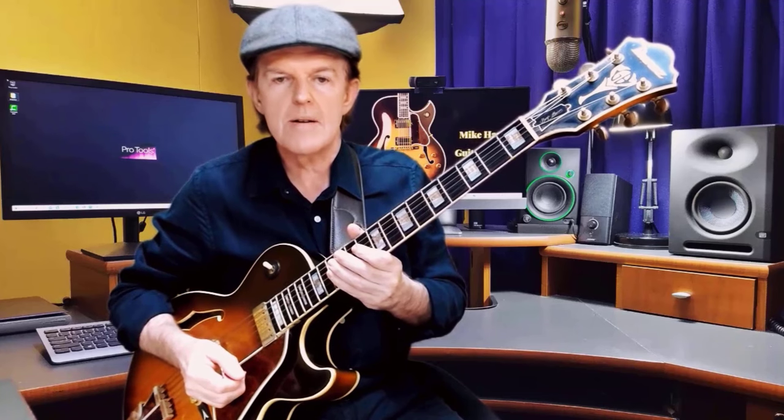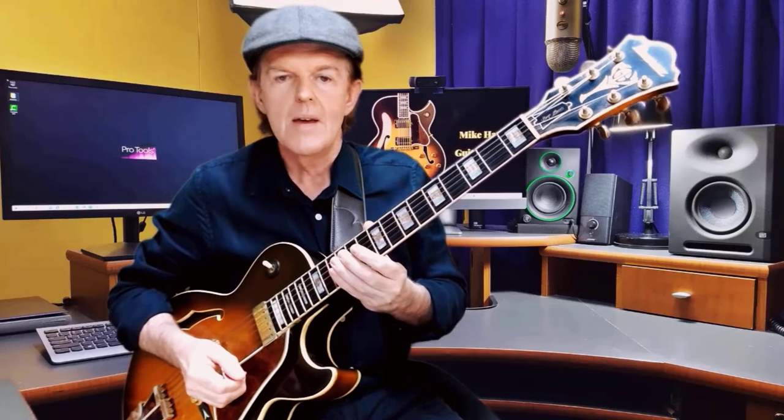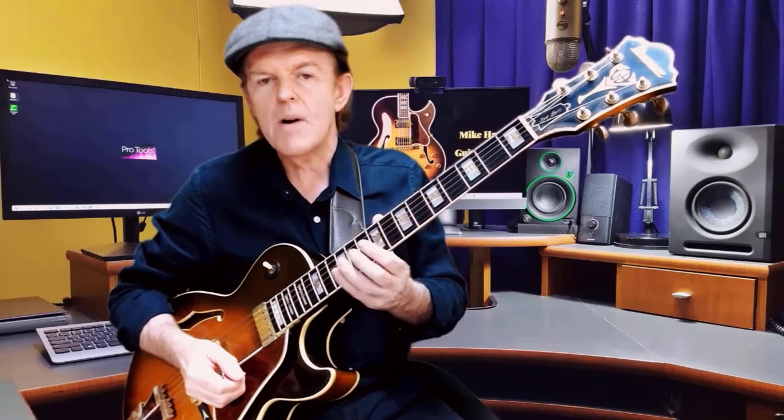The concept today involves keys that are a minor third apart. The first thing we'll be doing on this video is studying the E-flat major six diminished scale, but we'll also be combining it with the C major six diminished scale which we learned earlier. The distance between C and E-flat is a minor third.